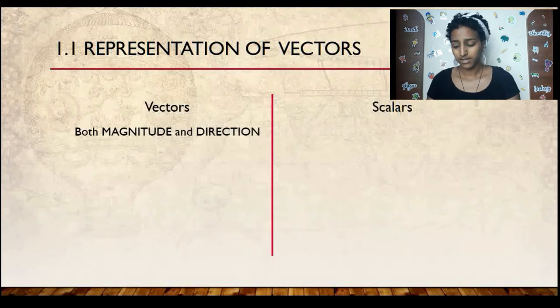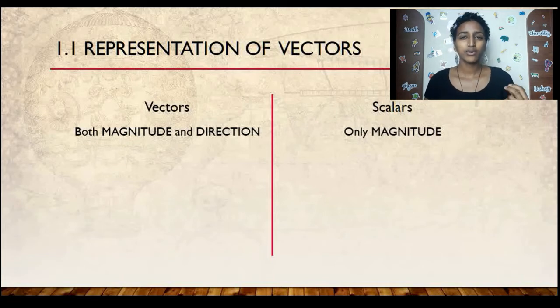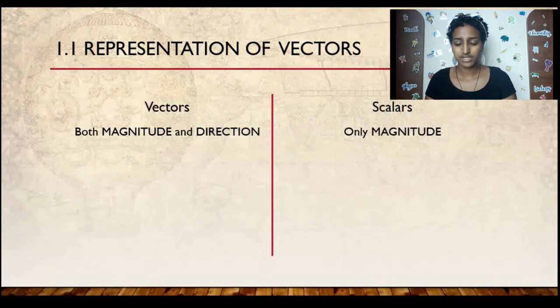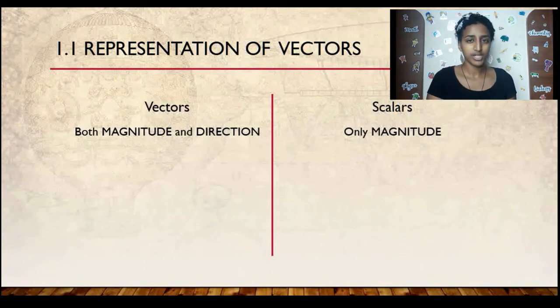But in order to understand vectors a little better, we first have to realize what a scalar is. A scalar is a quantity with only magnitude. When you hear the word magnitude, just think of a value, or a number, for instance. But a vector quantity, you have that magnitude, you have that number, along with a direction.